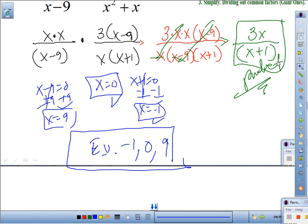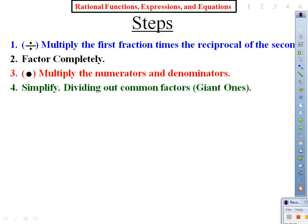Let's move to division. Here are the steps — and before you copy, look up. The difference from multiplication is just the first step: multiply the first fraction times the reciprocal of the second, then follow the multiplication process. Copy just the first step and write 'then follow multiplication process.'